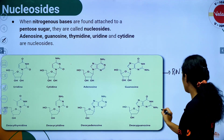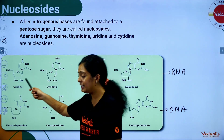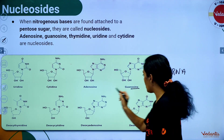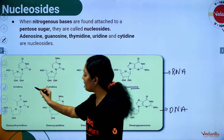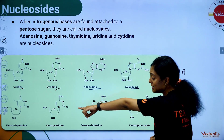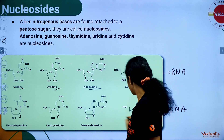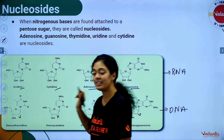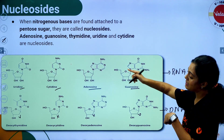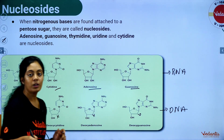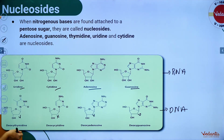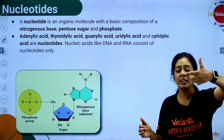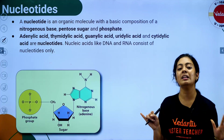Nucleoside nomenclature: the bond between sugar and base is the glycosidic bond. In RNA — adenosine, guanosine, uridine, cytidine. For purines we use the suffix '-sine'; for pyrimidines we use '-dine'. In DNA, because there is no oxygen at position 2, we prefix 'deoxy': deoxyguanosine, deoxyadinosine, deoxycytidine, and deoxythymidine. Uracil in RNA is replaced by thymine in DNA. Nucleotides: adenilic acid, thymidilic acid, guanilic acid, uridylic acid, and cytidylic acid.